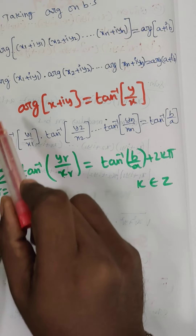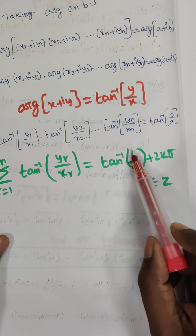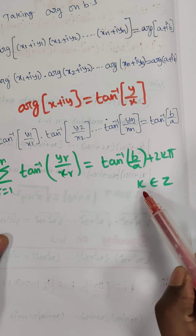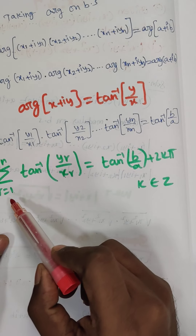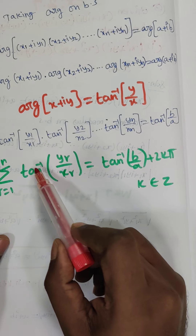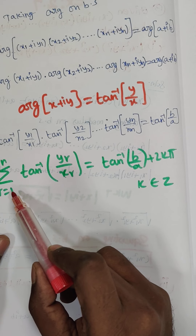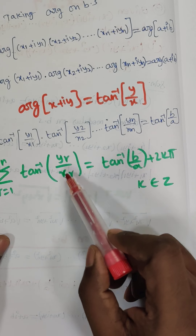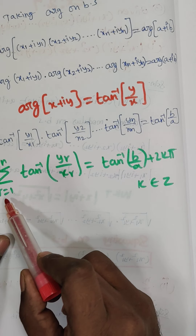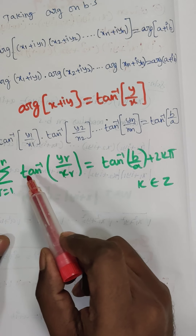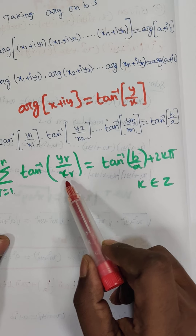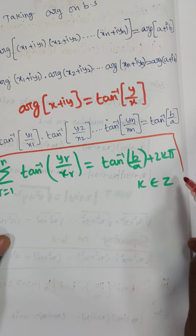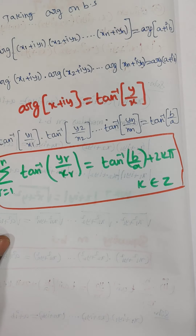The 2kπ is added because the argument θ can have multiple values: θ + 2kπ, where k belongs to ℤ. If you put r = 1, you get tan⁻¹(y1/x1); r = 2 gives tan⁻¹(y2/x2); r = n gives tan⁻¹(yn/xn). So the summation r = 1 to n of tan⁻¹(yr/xr) = tan⁻¹(b/a) + 2kπ. This is the answer for the second substitution. Thank you, children.